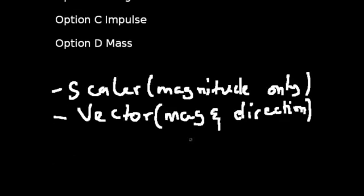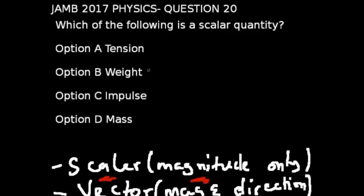In physics, most of the physical quantities we encounter can either fall under scalar quantities or vector quantities. By definition, a scalar quantity is a quantity which has magnitude only and no direction. From the options, the correct answer to this question is option D.